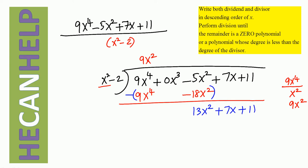We don't have to bring 0x cubed down — 0 times anything is 0. So now what is the leading term? 13x squared. And what is the leading term of the divisor? x squared. So what is 13x squared divided by x squared? 13.